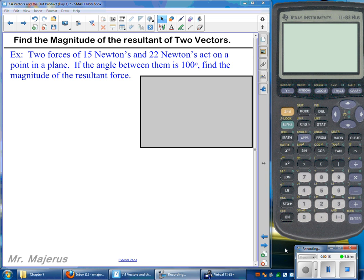It says two forces of 15 newtons and 22 newtons act on a point in a plane. If the angle between them is 100 degrees, find the magnitude of the resultant force. So if those two forces are working together on the same object, on the same point, which direction and with how much force is it going to be applied to that point?